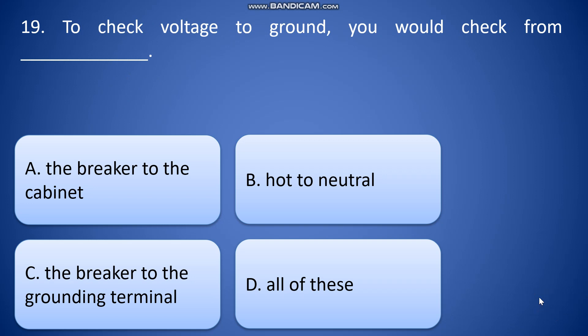Number 19, to check the voltage to ground you would check from: the breaker of the cabinet, hot to neutral, the breaker to the grounding terminal, or all of this. So the answer is all of this.